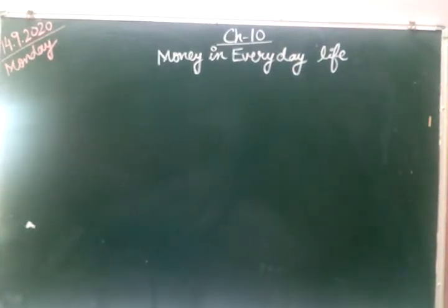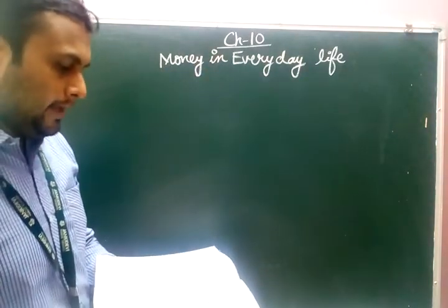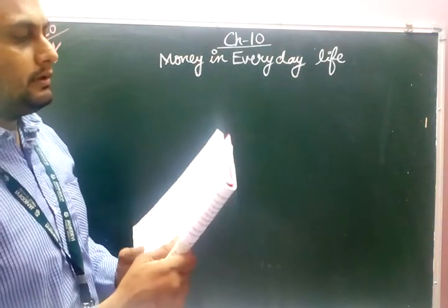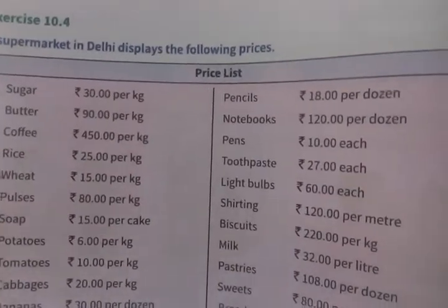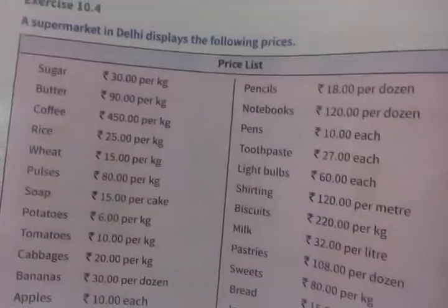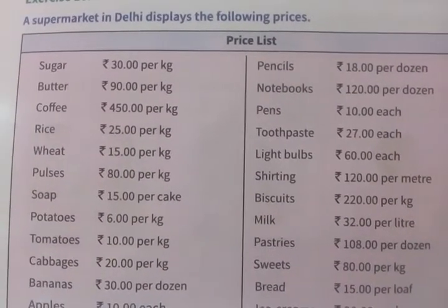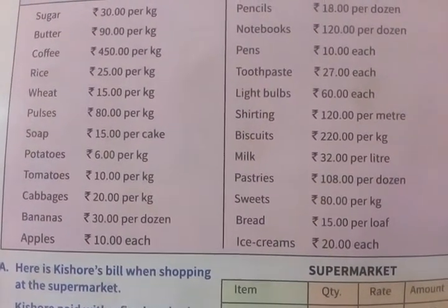Now students, we are going to work on Exercise 10.4 from your book. Delhi Market displays the following supermarket prices. Sugar: 30 rupees per kg. Butter: 90 rupees per kg. These prices are per kg. Soup is per cake. Tomatoes, potatoes, and cabbage are also listed. Bananas are priced per dozen.